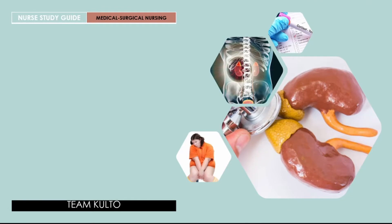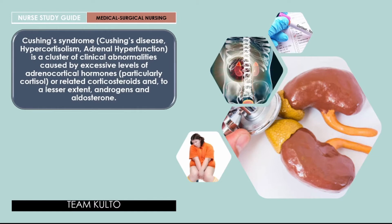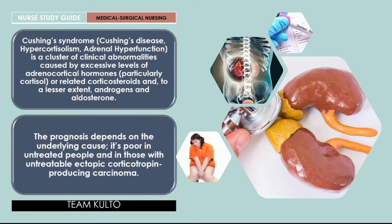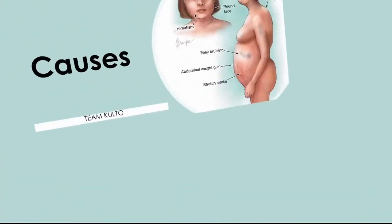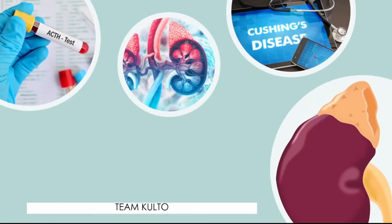Cushing's syndrome — also called Cushing's disease, hypercortisolism, or adrenal hyperfunction — is a cluster of clinical abnormalities caused by excessive levels of adrenocortical hormones, particularly cortisol. These are related to corticosteroids and to a lesser extent androgens and aldosterone. The prognosis depends on the underlying cause; it is poor in untreated people and in those with untreatable ectopic corticotropin-producing carcinoma. Note the prefix 'hyper' — too much cortisol.